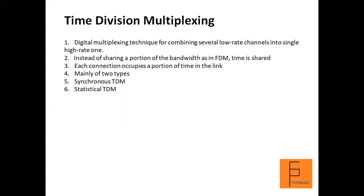Time division multiplexing is a digital multiplexing technique. Instead of sharing a portion of the bandwidth as in FDM, in TDM we share time — each connection occupies a portion of time on the link. TDM is mainly of two types: synchronous time division multiplexing and statistical time division multiplexing.